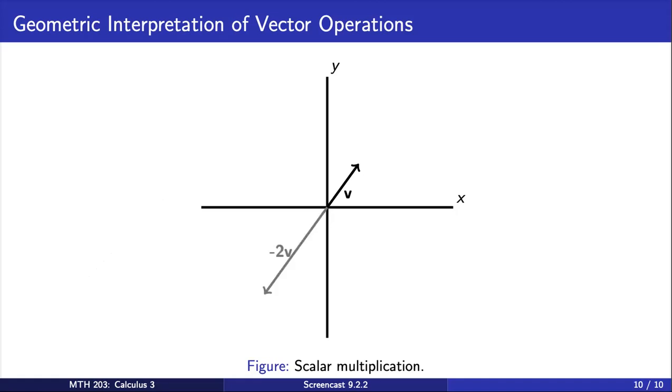On the other hand, the scalar multiple, negative 2 times v, would stretch the vector v by a factor of 2 and point in the opposite direction. Here, we see that multiplying by a negative scalar changes the direction of a vector.